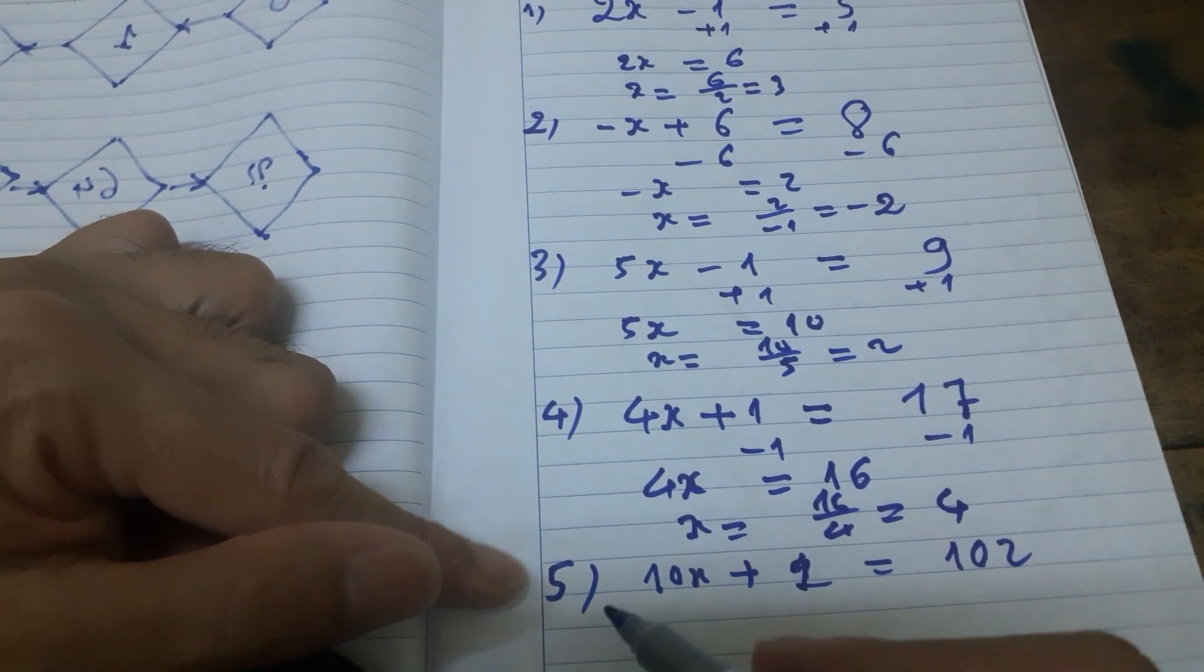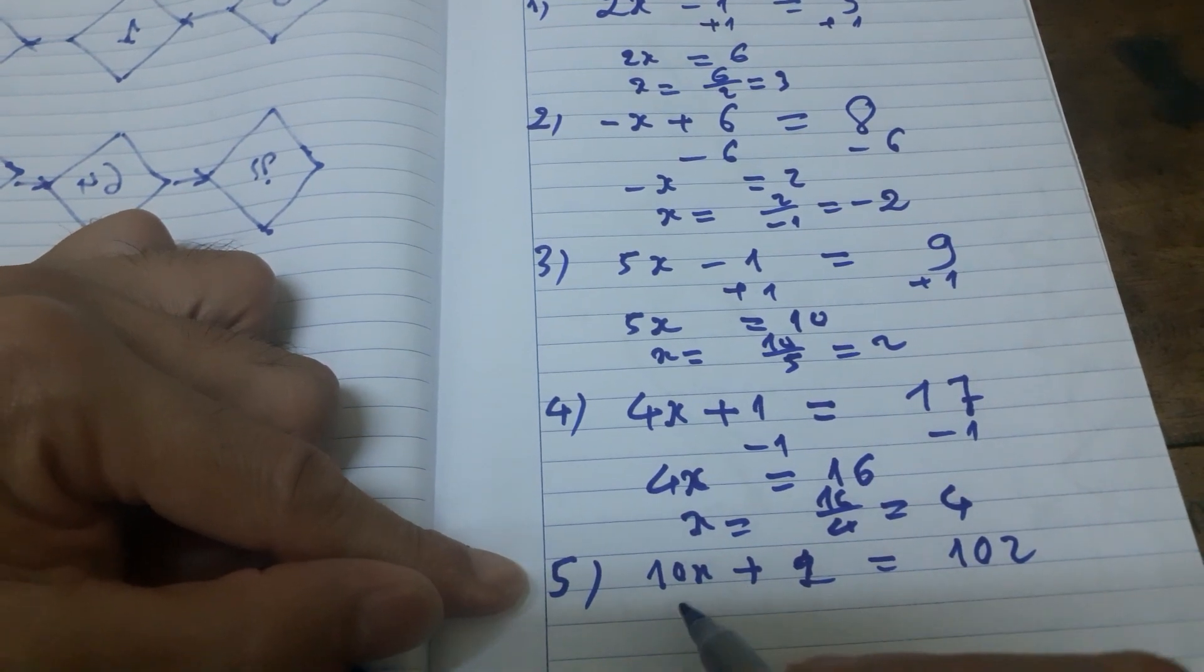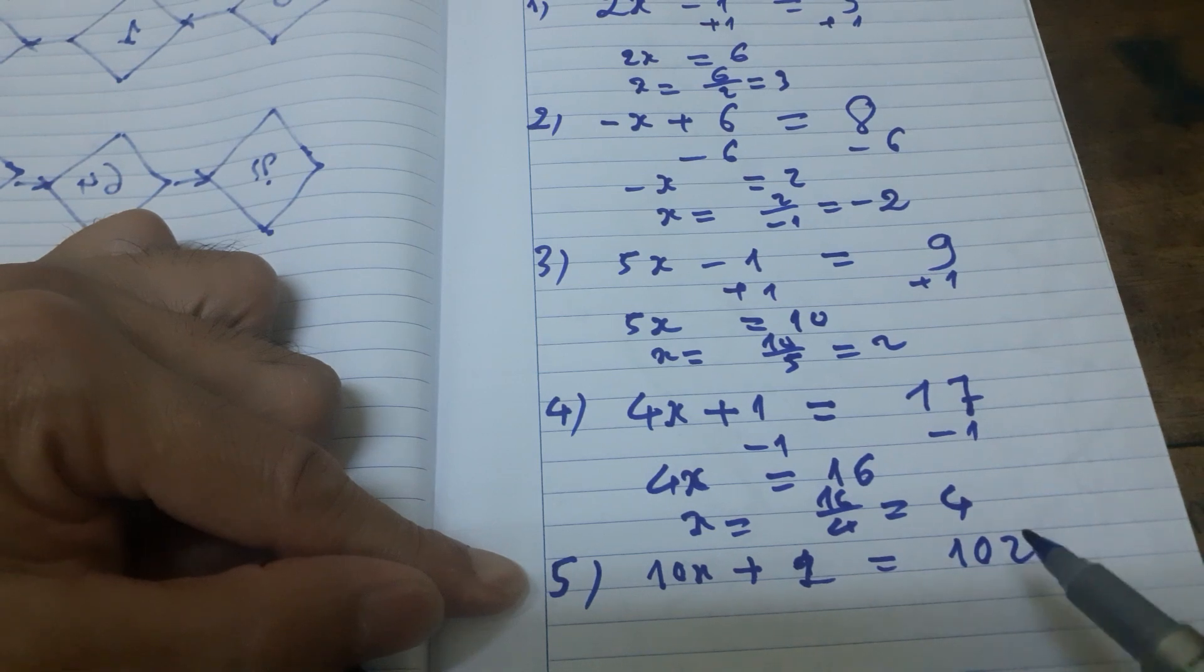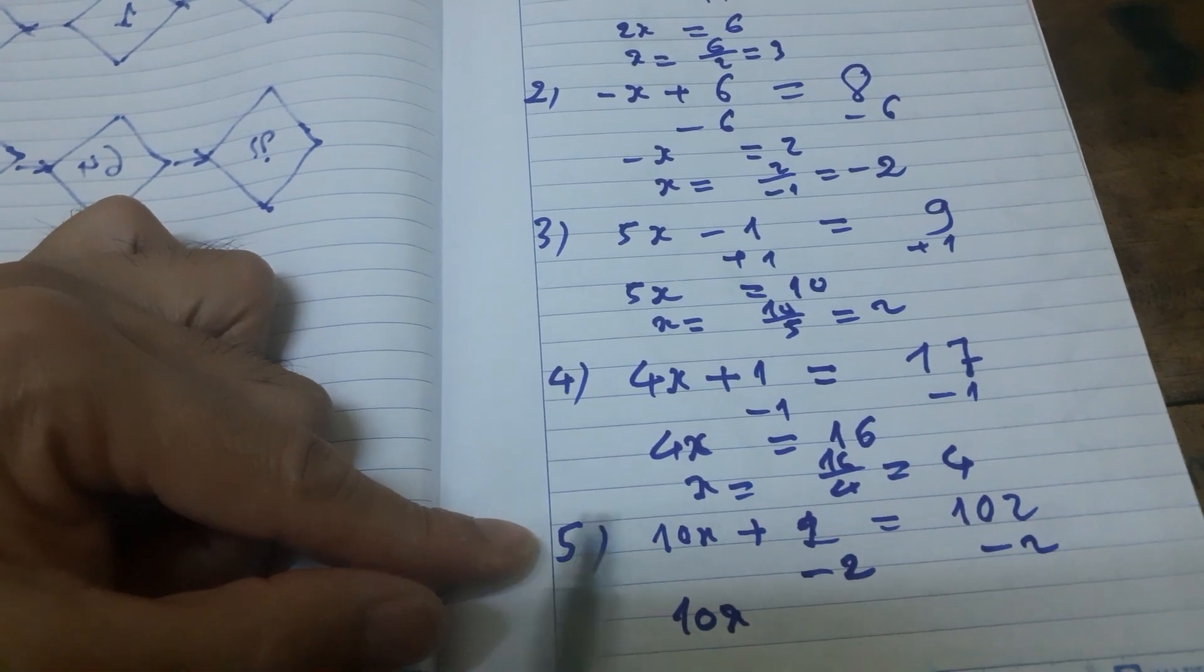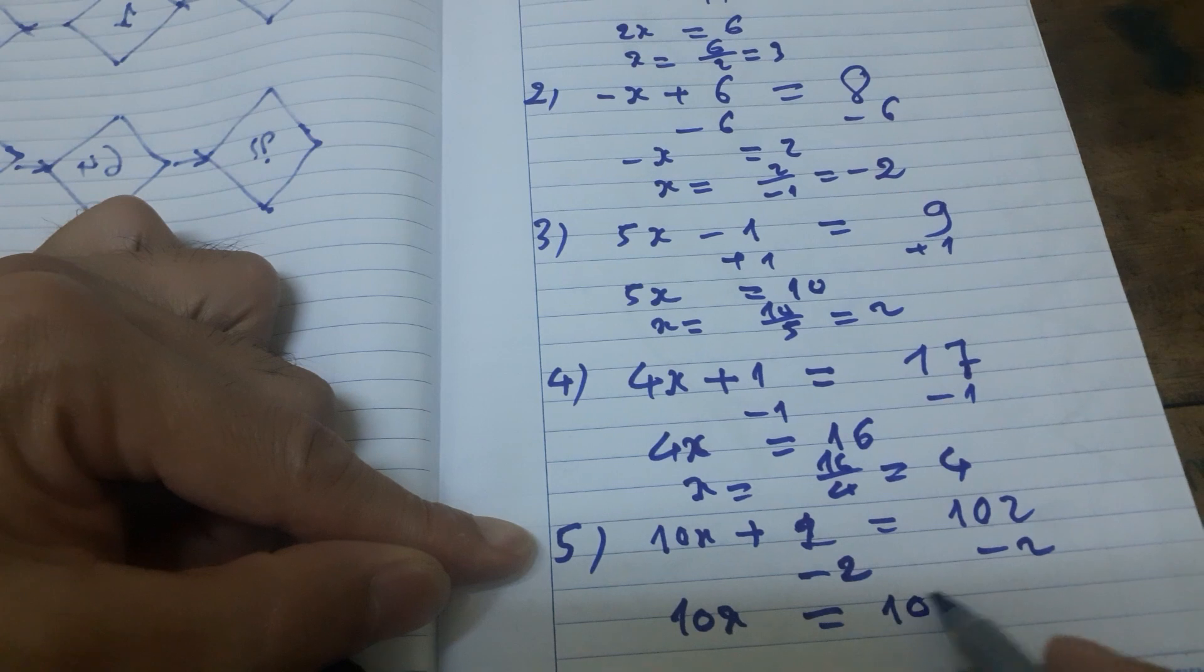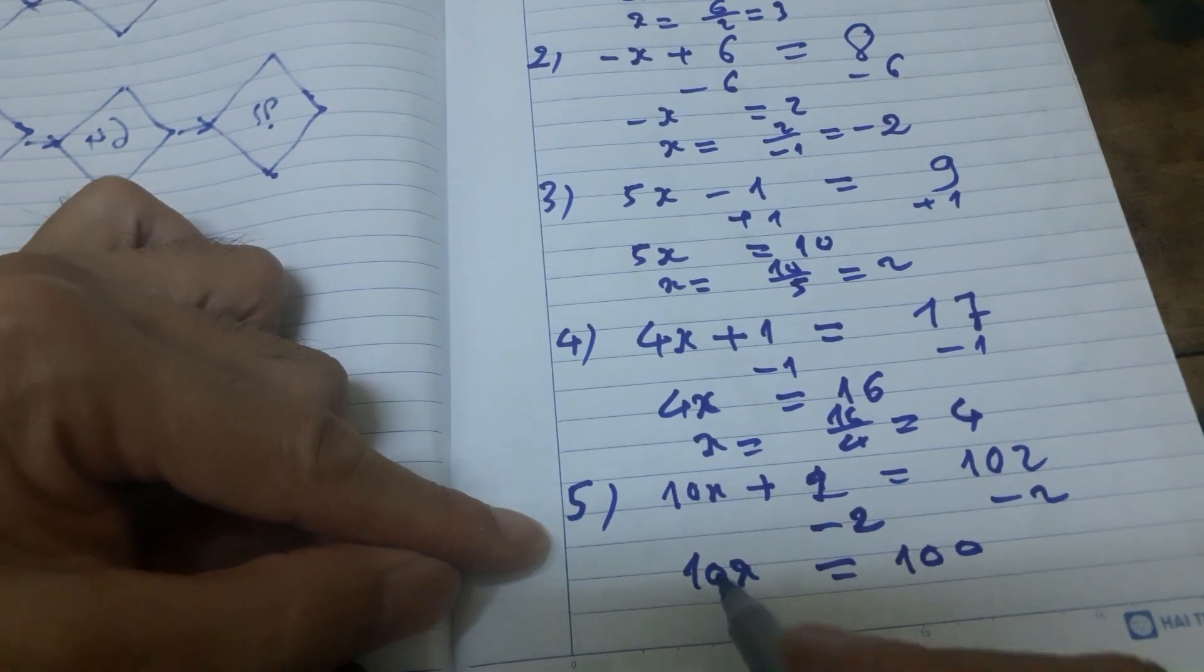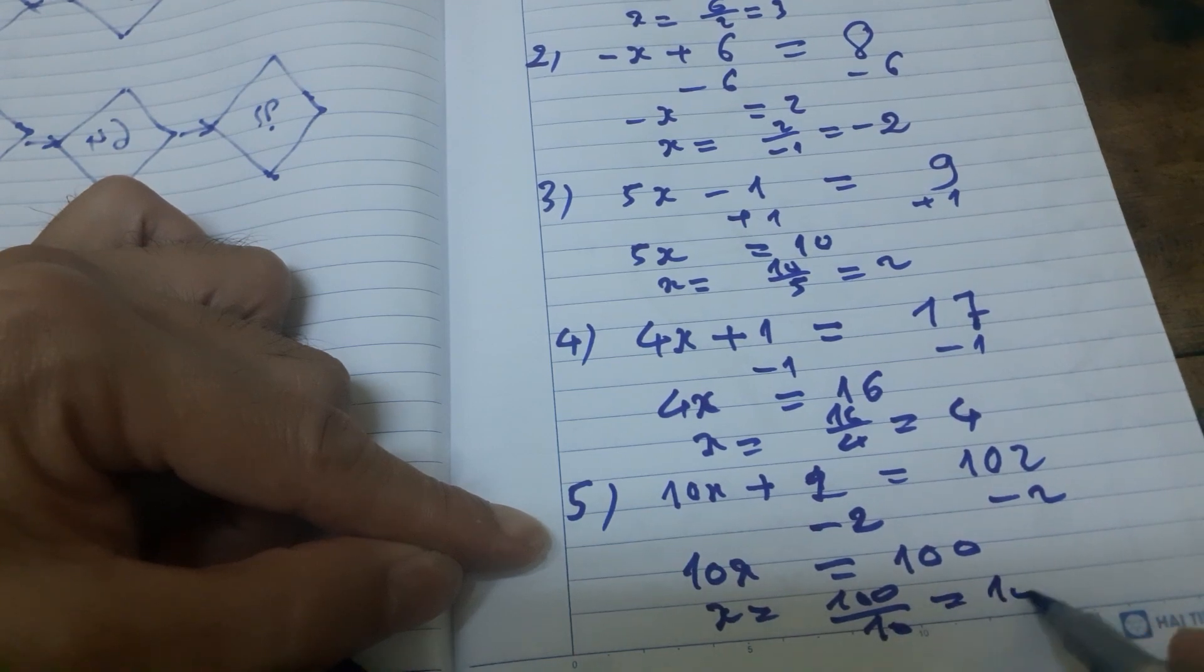Example 5: 10x + 2 = 102. Subtract 2 from both sides. Minus 2, minus 2. 10x + 2 - 2 equals 0, equals 102 minus 2 equals 100. x equals 100 divided by 10 equals 10.